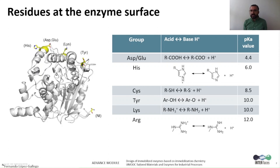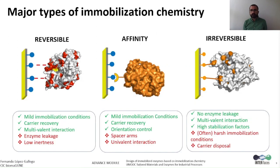Mainly lysines and cysteines are the best amino acids on the surface of enzymes to make irreversible bonds through nucleophilic attack and Michael addition reactions. Thus, we can have three major types of immobilization chemistry: reversible, by affinity, and irreversible.